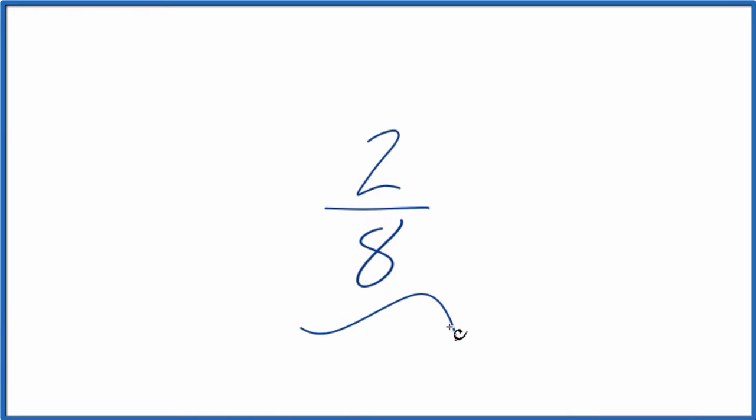Let's convert the fraction 2 eighths to a decimal. So for 2 eighths, we could simplify it right off. We could divide the top and the bottom by 2, since these are even numbers. That would give us 1 fourth.